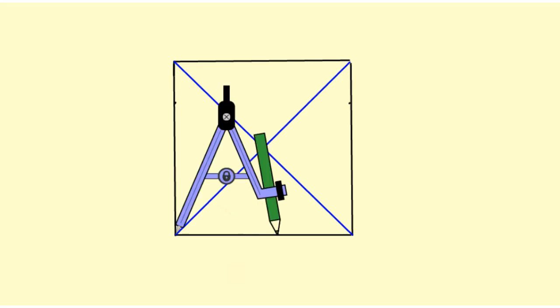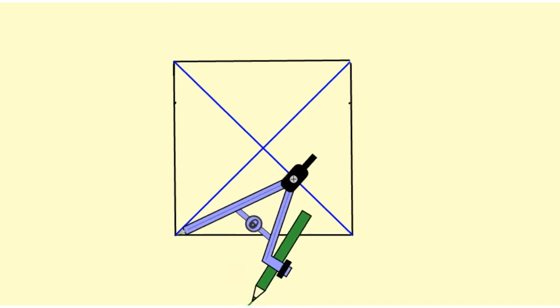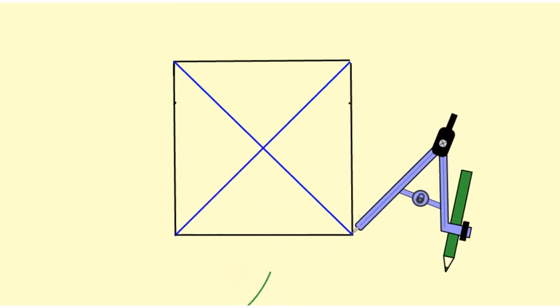To do that, I take my compass and put the point at the vertex of my square, making sure the compass is open over halfway. Then I draw intersecting arcs below from both of these vertices.